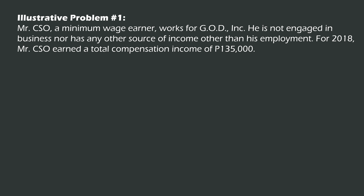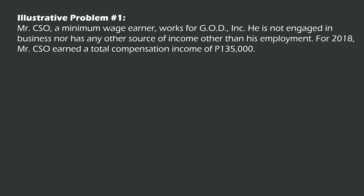Let's start with our first problem. Mr. CSO is a minimum wage earner who is not engaged in business nor has any other source of income other than his employment. The taxpayer earned a total compensation income of 135,000. The taxpayer contributed to the SSS, PhilHealth, and HDMF or Pag-IBIG amounting to 5,000 and has a 13th month pay of 11,000.